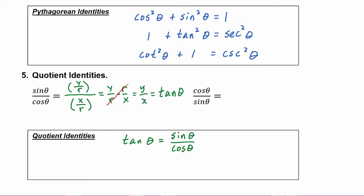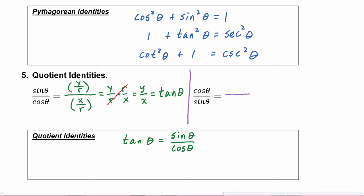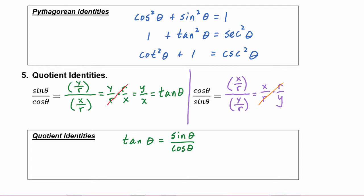Next, we have cosine theta over sine theta. We know cosine theta is x over r and sine theta is y over r, so this turns into x over r times r over y. Once again the r's cancel out and we're left with x over y, which we know is cotangent theta.